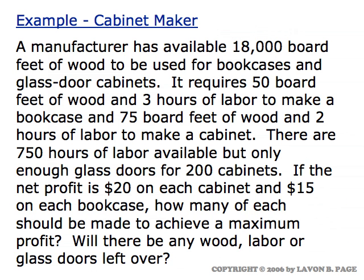The second example is that of a cabinet maker. The cabinet maker makes two products, bookcases and glass door cabinets. There's a known amount of lumber available. We know how much wood it takes and how much labor it takes to make each of the two items, the bookcase or the glass door cabinet. We know how much labor is available. There's a limit on glass doors, which limits the number of cabinets that can be made. And we know how profitable it is to make a cabinet or to make a bookcase.